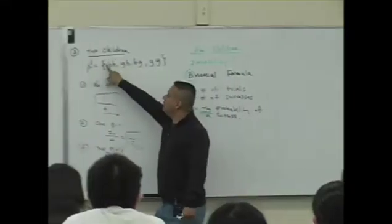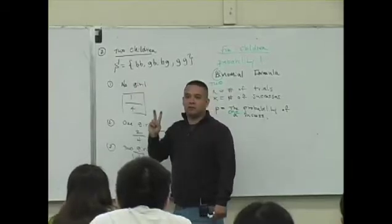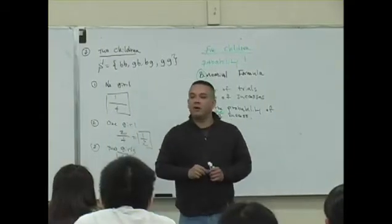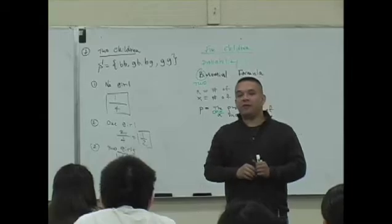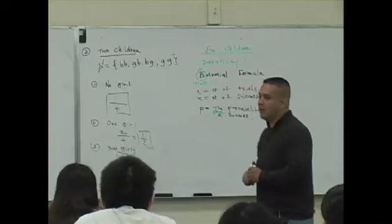In this scenario, you have two children. You have how many trials? Two. You guys okay with this? What if you have 10 children? How many trials are you going to have? Ten. Twenty children? Twenty. You could even use this formula if you planned on having 100 children.